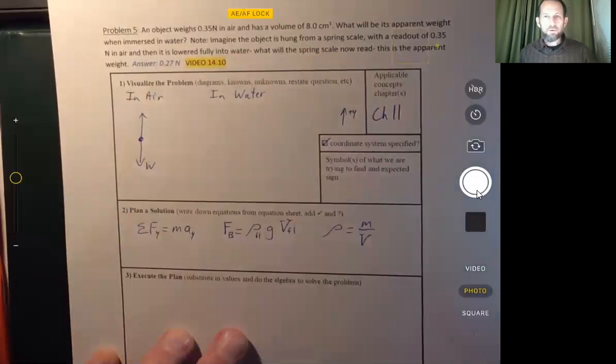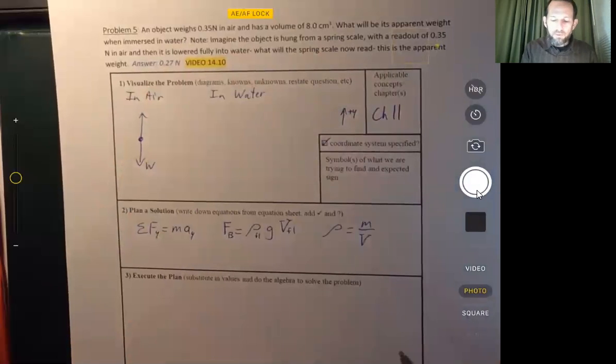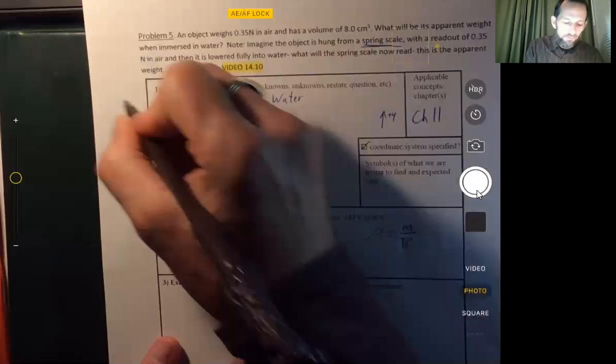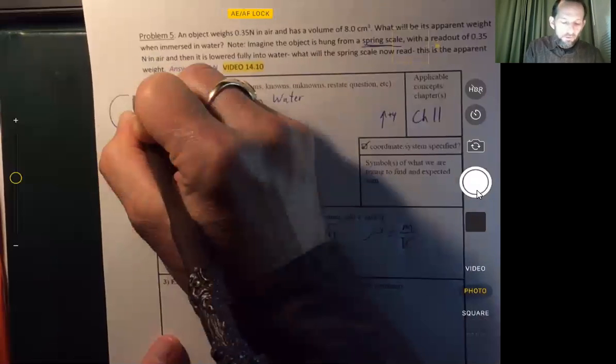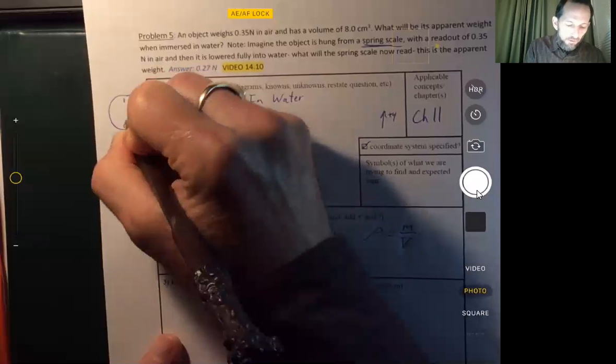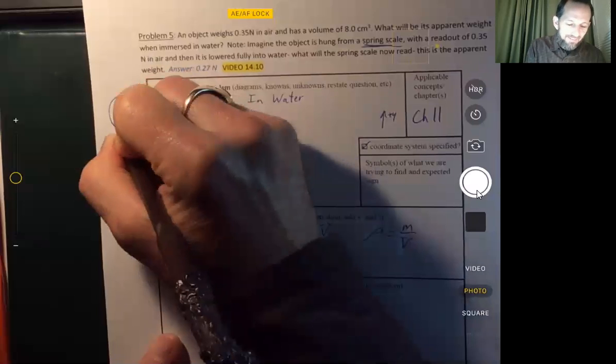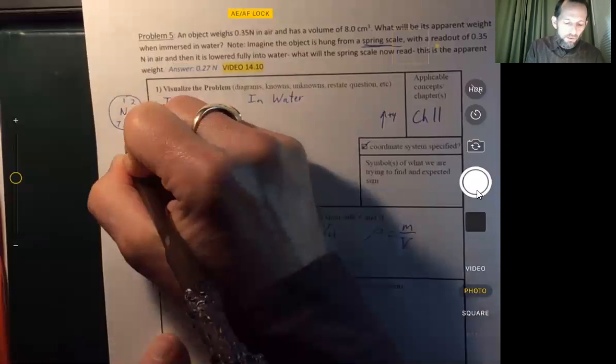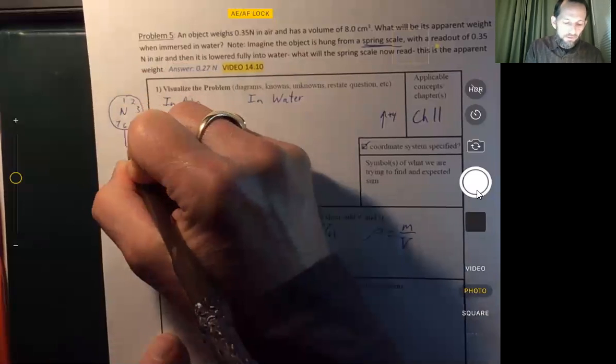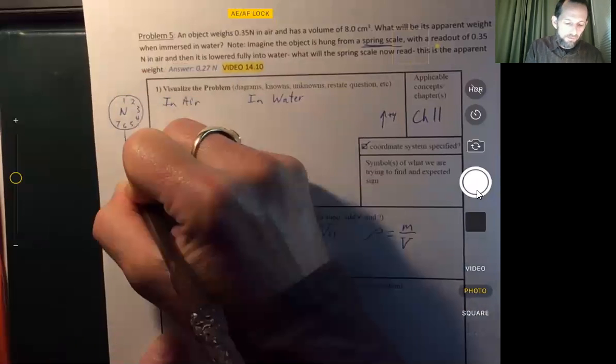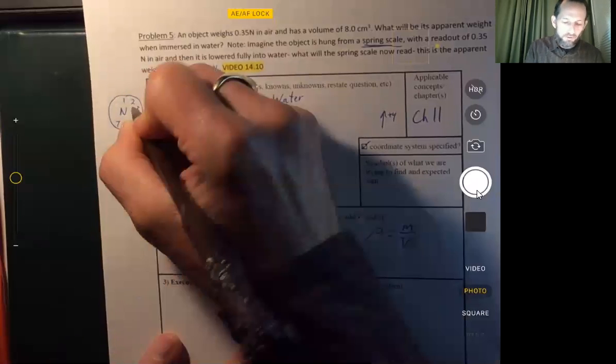Well, imagine that we're weighing it with a spring scale. So a spring scale has a readout, it's starting to look like a clock there, and that's measured in newtons, and it has a hook on it. And then you can take a string, and you can hang your object, and it'll have a certain readout.